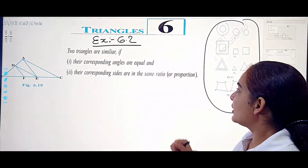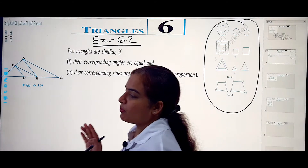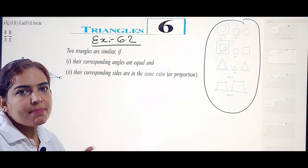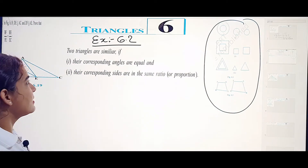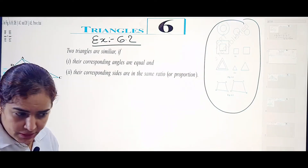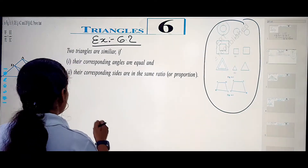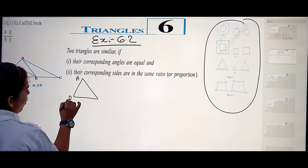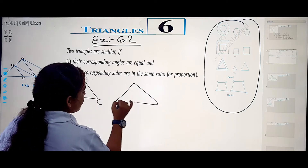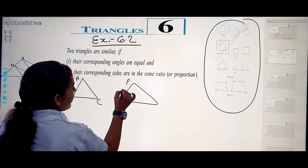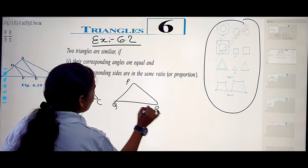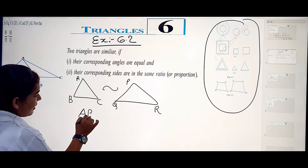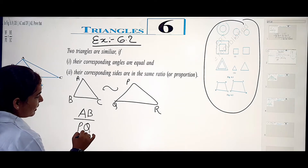The sides should be in the same ratio — proportional and equal. These are the basic concepts for similar triangles. Now, if two triangles are ABC and PQR, these two are similar when the sides are proportional and equal.